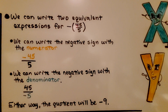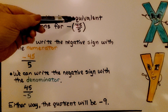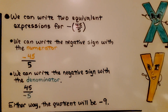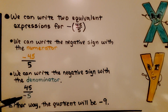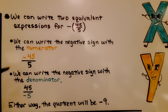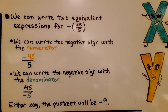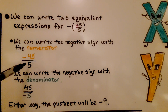We can write two equivalent expressions for negative 45 fifths. We can write the negative sign with the numerator, or we can write the negative sign with the denominator. Either way, the quotient will be negative 9 — they have unlike signs, so the quotient is negative, and 45 divided by 5 is 9.